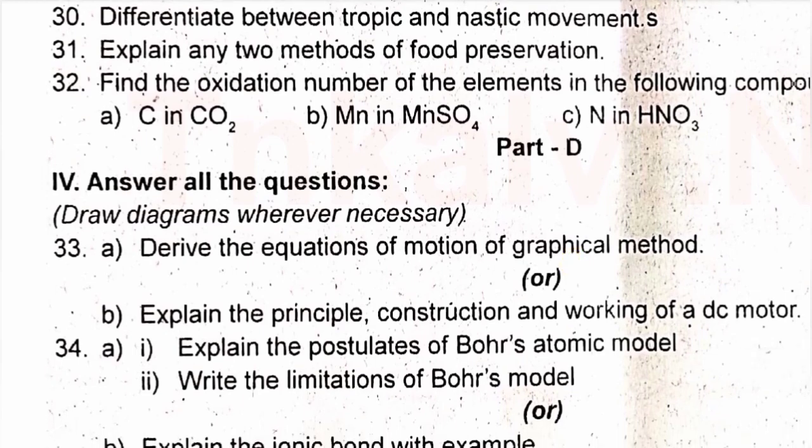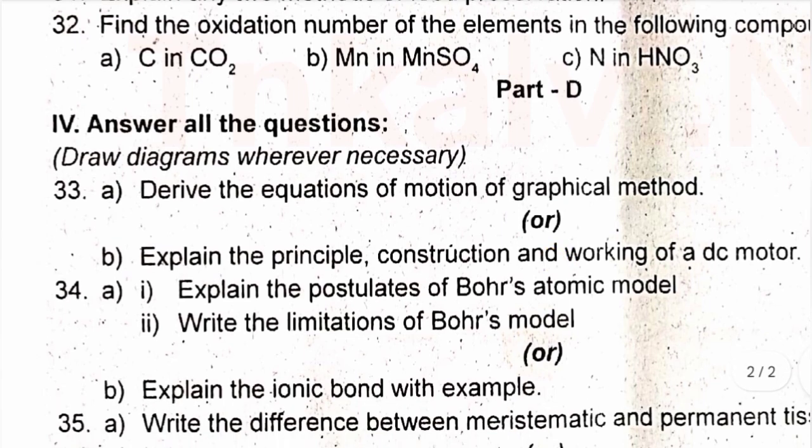Question 34A: Explain the postulates of Bohr's atomic model and write the limitations of Bohr's model. Or, Question 34B: Explain the ionic bond with an example. Choose A or B and answer accordingly.